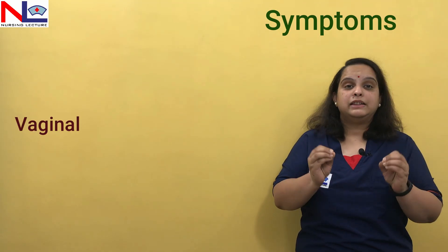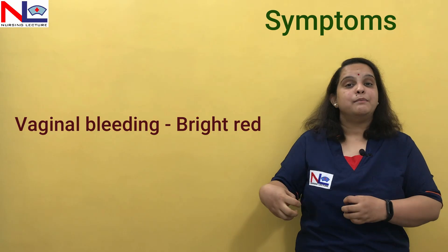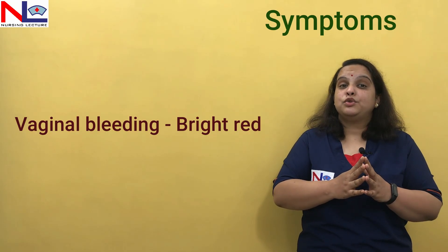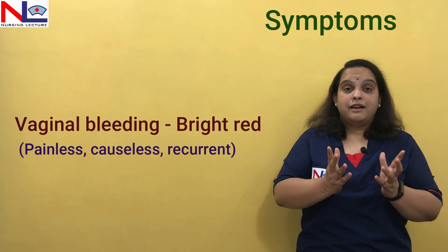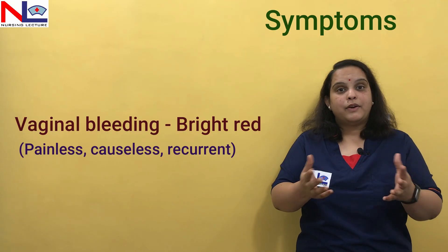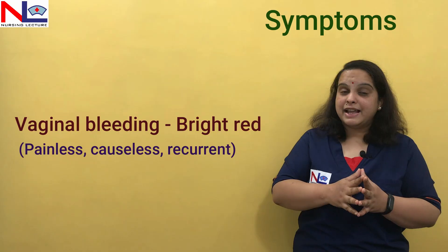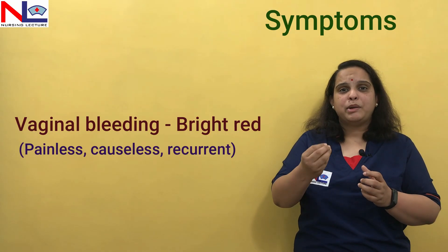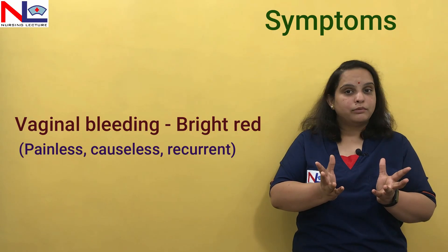The classical symptom of placenta previa is vaginal bleeding that is bright red, because once the placenta separates, blood oozes out and comes directly through the vaginal introitus as fresh blood. This bleeding is painless — the woman may say she was resting and suddenly found herself lying in a pool of vaginal blood. It is causeless, painless, and can be recurrent, with an initial warning hemorrhage that can reappear unpredictably.